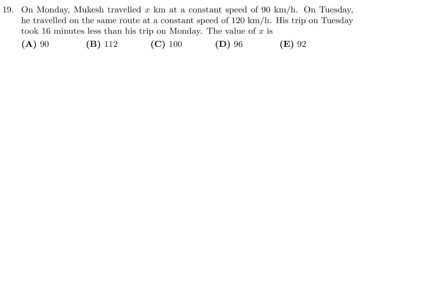On Monday, Mukesh traveled X kilometers at a constant speed of 90 kilometers an hour. On Tuesday, he traveled on the same route at a constant speed of 120. His trip on Tuesday took 16 minutes less than his trip on Monday. The value of X is. Time is equal to distance over speed. So on Monday, his time is X over 90. And on Tuesday, time is X over 120.